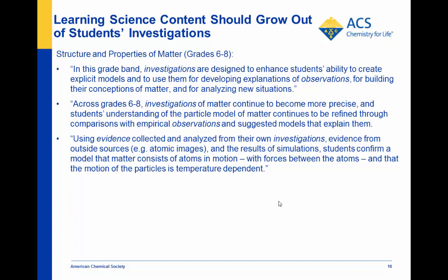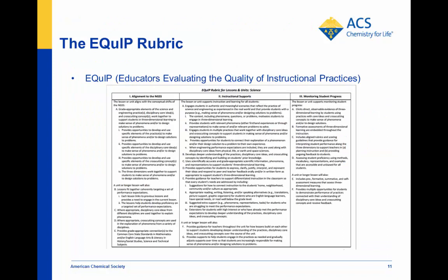The lessons in middleschoolchemistry.com very closely follow this direction from the framework. There's also more guidance in a document called the EQUIP rubric — it stands for Educators Evaluating the Quality of Instructional Practices. It's not in the standards or in the framework, but it's a more detailed approach for evaluating curriculum with respect to the NGSS. It has three categories: alignment to the NGSS, instructional supports, and monitoring student progress. Even a quick look shows it's all about students investigating phenomena and being able to explain it. The lessons and units in middleschoolchemistry.com meet the vast majority of the criteria in the EQUIP rubric.